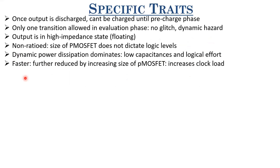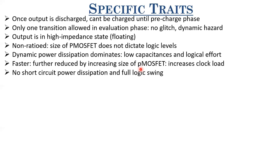You can reduce delay further by increasing the size of the P-MOSFET to reduce DPLH. However, increasing the P-MOSFET size also increases its input capacitance, and since the clock drives both the P-MOSFET and the evaluation N-MOSFET, it increases the clock's load. If you have a chain of such gates, driving all such large P-MOSFETs increases load on the clock. Also, since there is no path between VDD and ground, there's no short-circuit dissipation and you obtain a full logic swing.